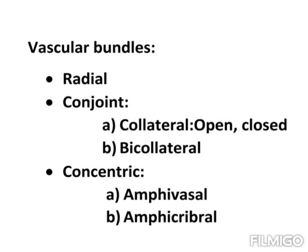There are three different types of vascular bundles. They are radial, conjoined, and concentric.